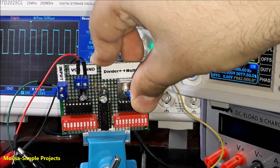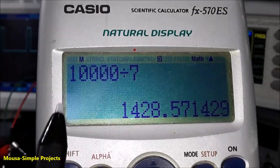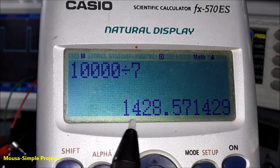And when I select frequency divider, the output frequency will be 1.4 kHz, because 10 kHz divided by 7 equals 1.4 kHz.